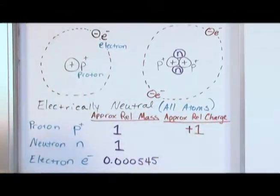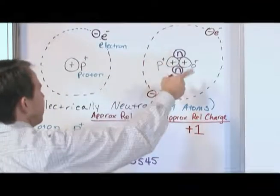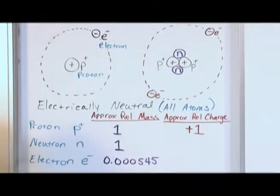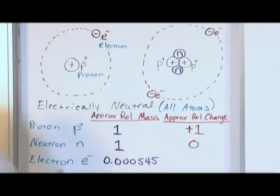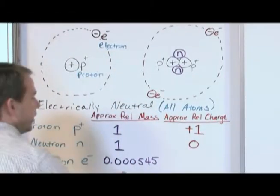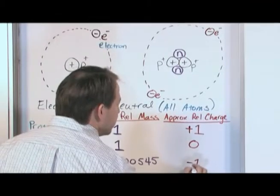which is typically what you think about. That's what I've been telling you, it has a charge of plus 1. A neutron, because it has no charge, has a charge of 0. And an electron has a charge of, you guessed it, negative 1.